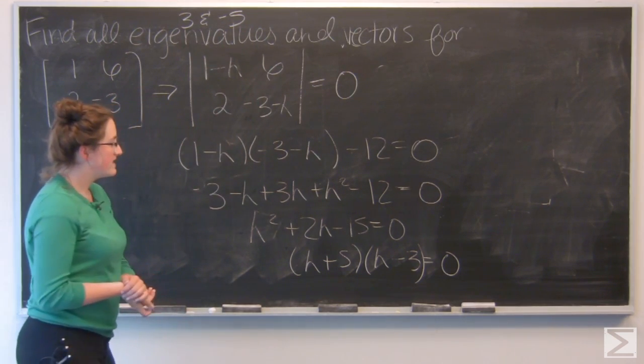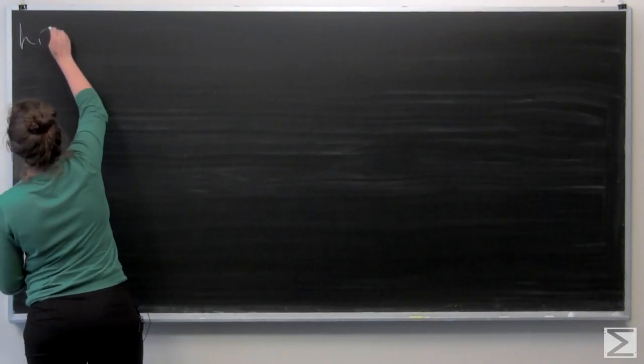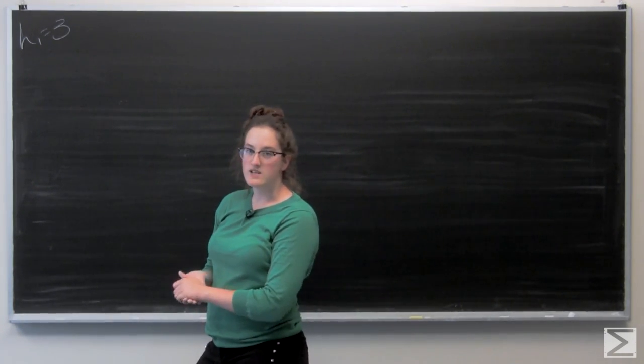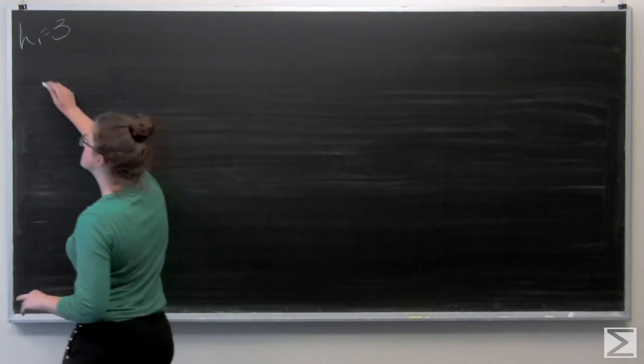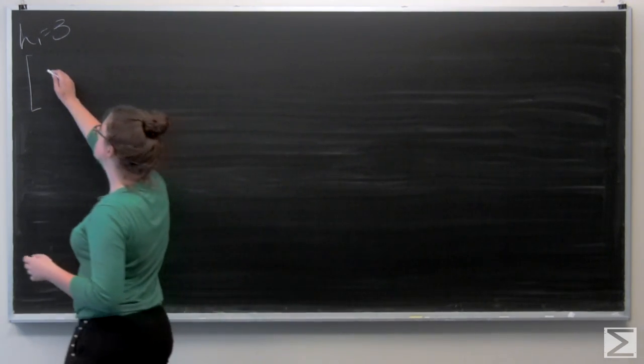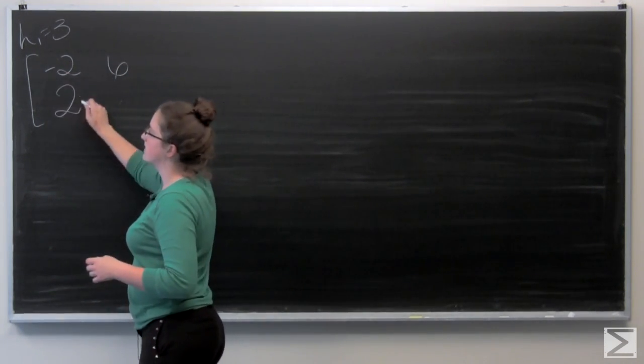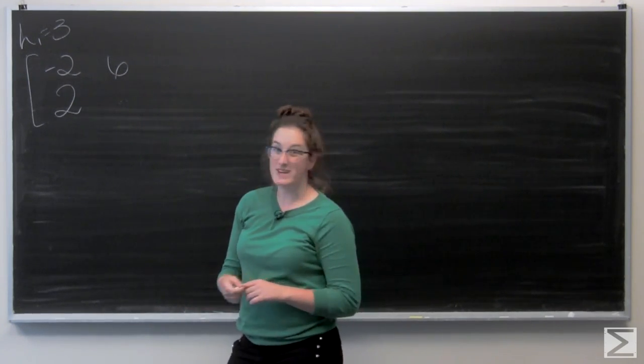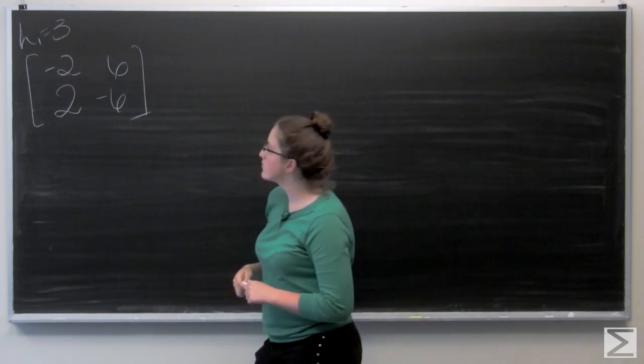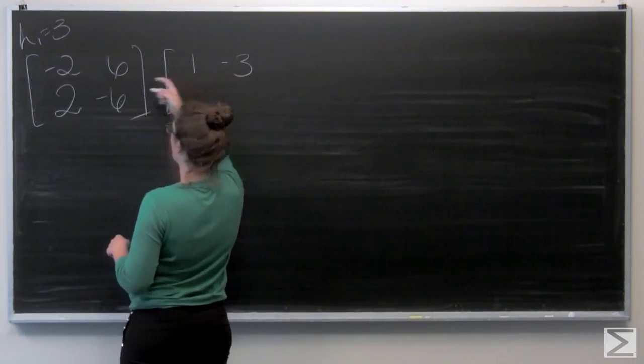So let's go ahead and find the eigenvector associated with lambda equals 3. So now I just want to subtract 3 along the main diagonal and find the solution to the matrix. So I have 1 minus 3, so negative 2. And negative 3 minus 3, which gives me negative 6.